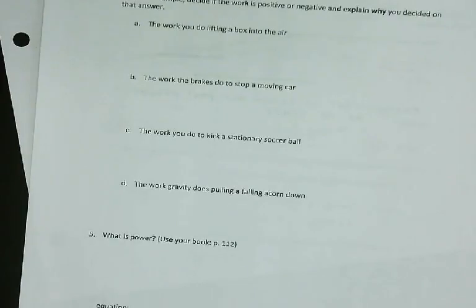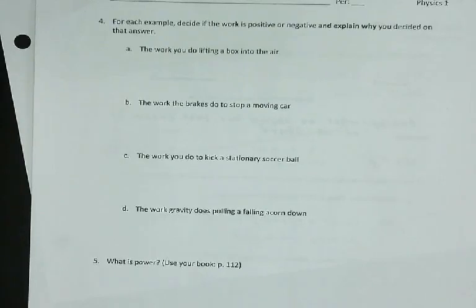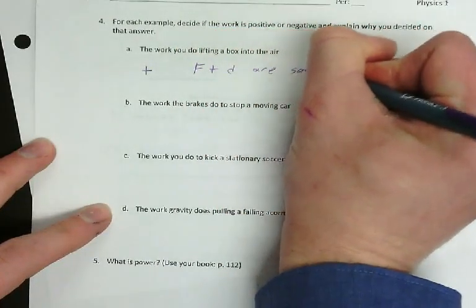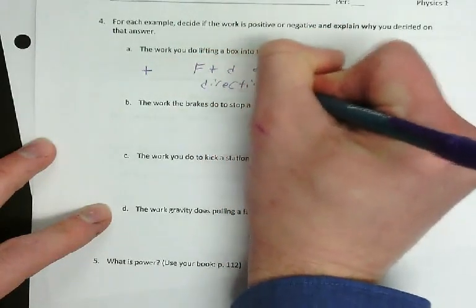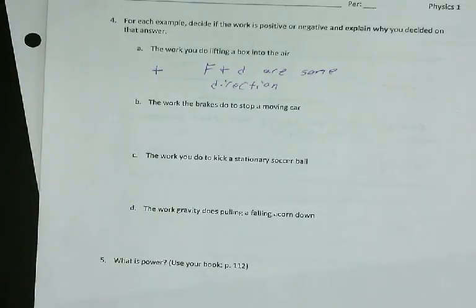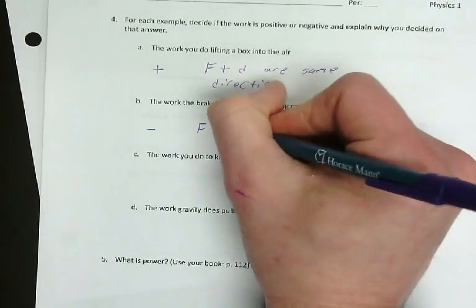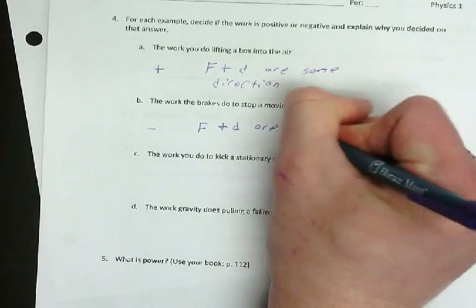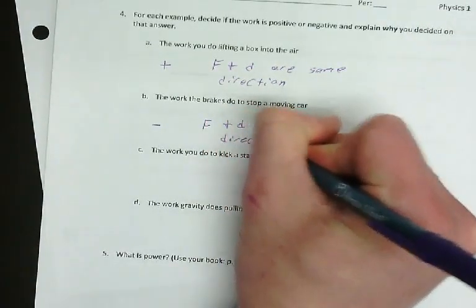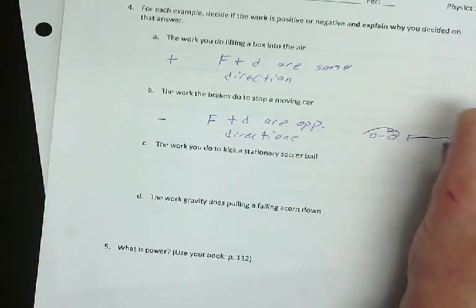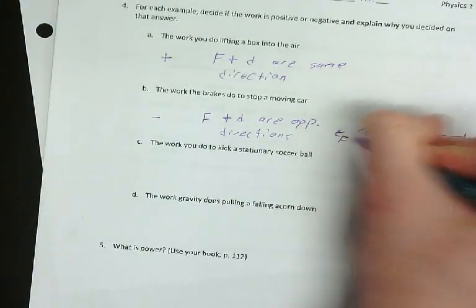For problem four: example A, work done to lift a box into the air — that is positive work because F and D are in the same direction. Example B, work done by the brakes to stop the car — that is negative work because F and D are in opposite directions. The car is going forward, but the braking force is backward, so that is negative work.